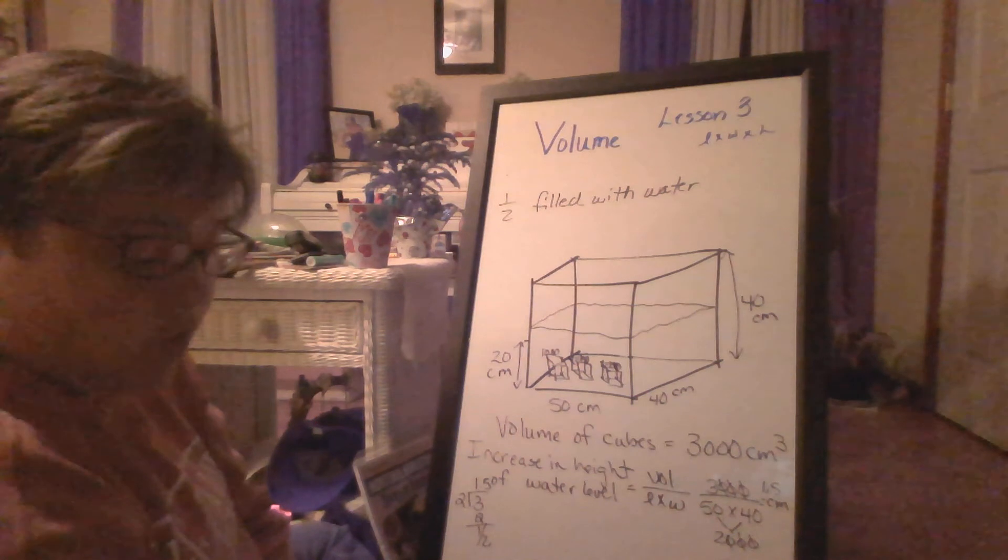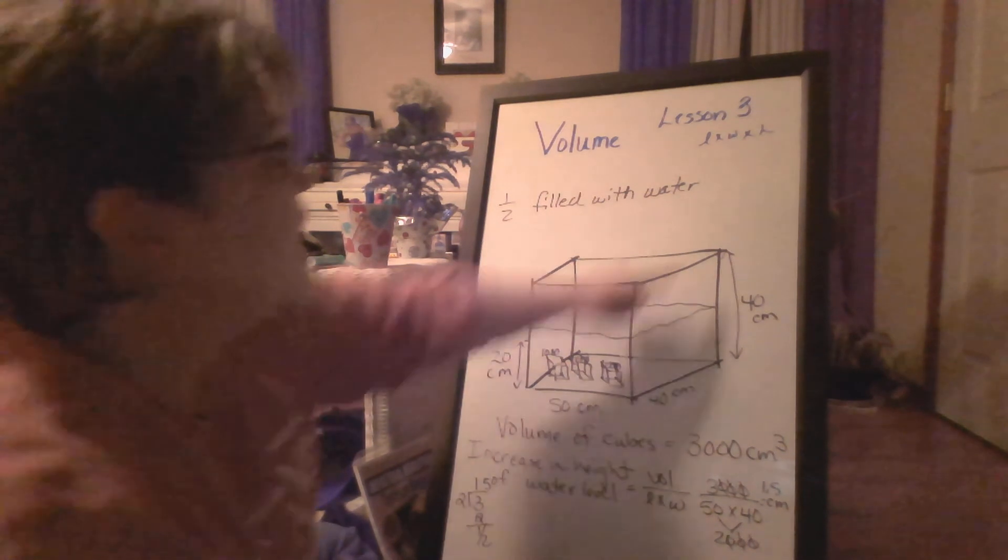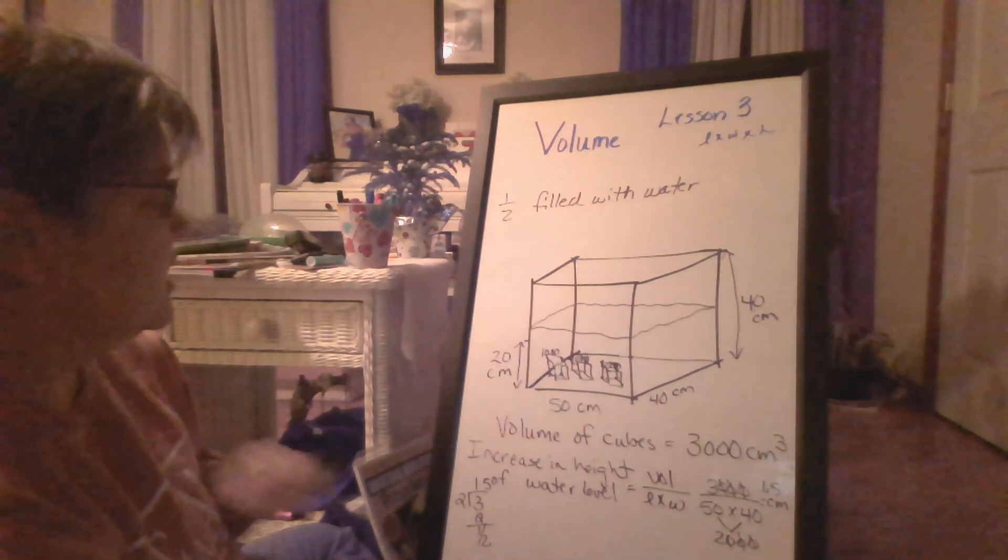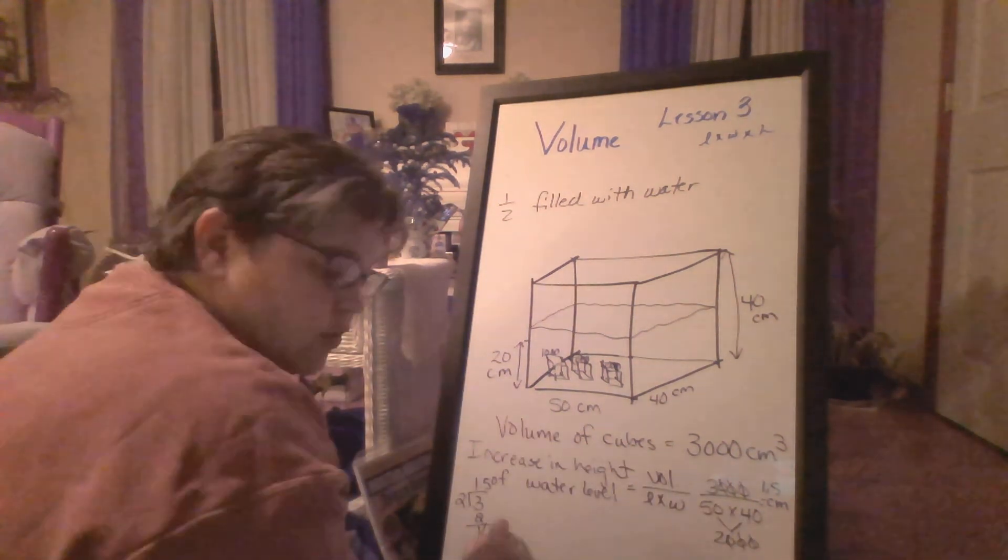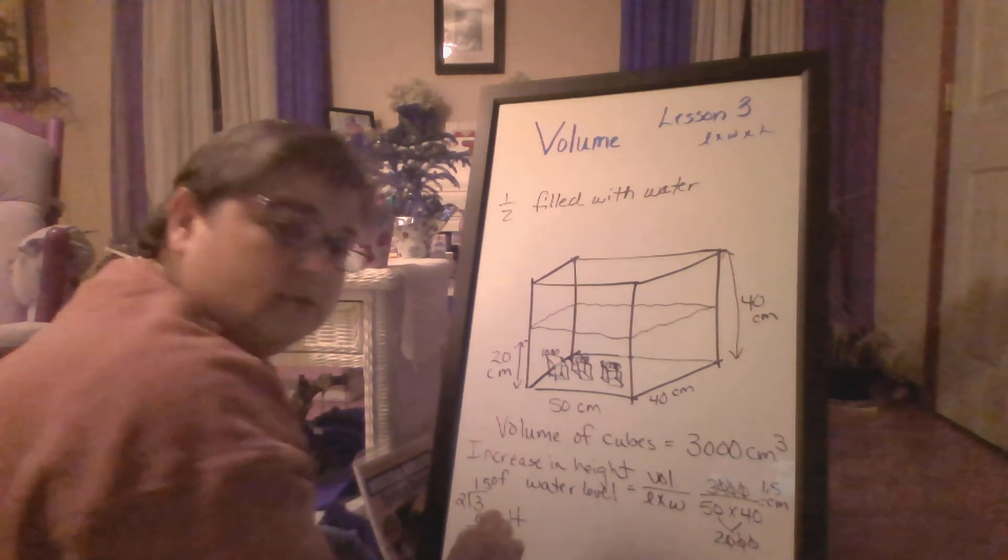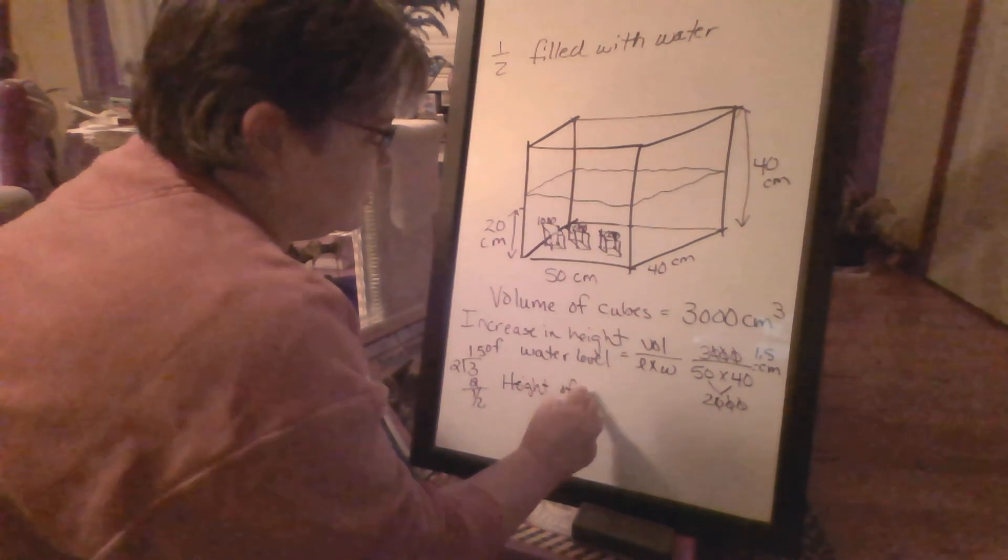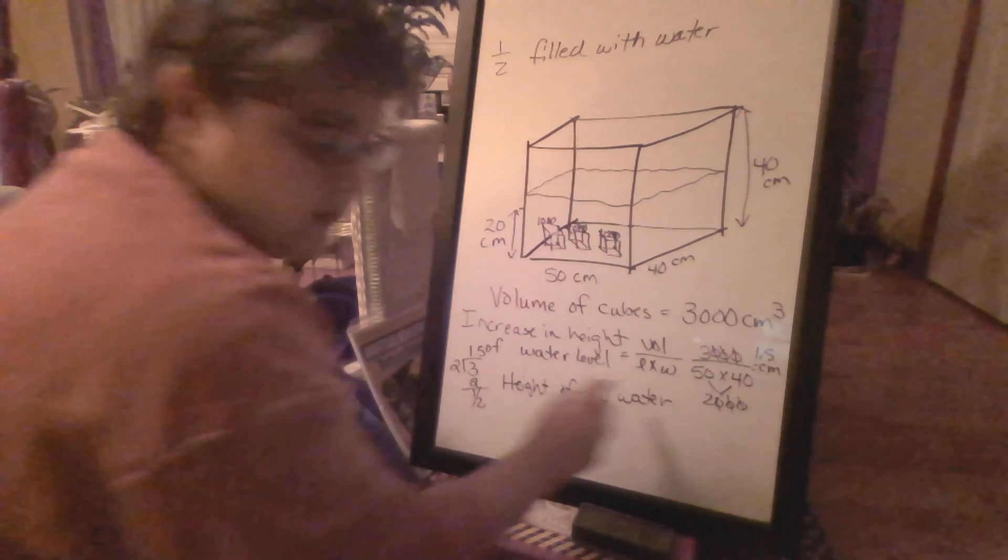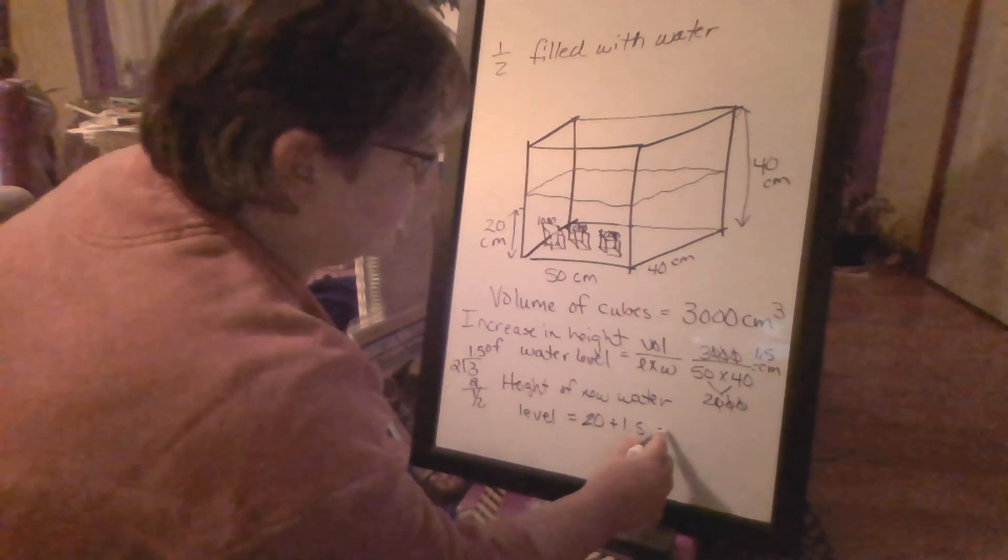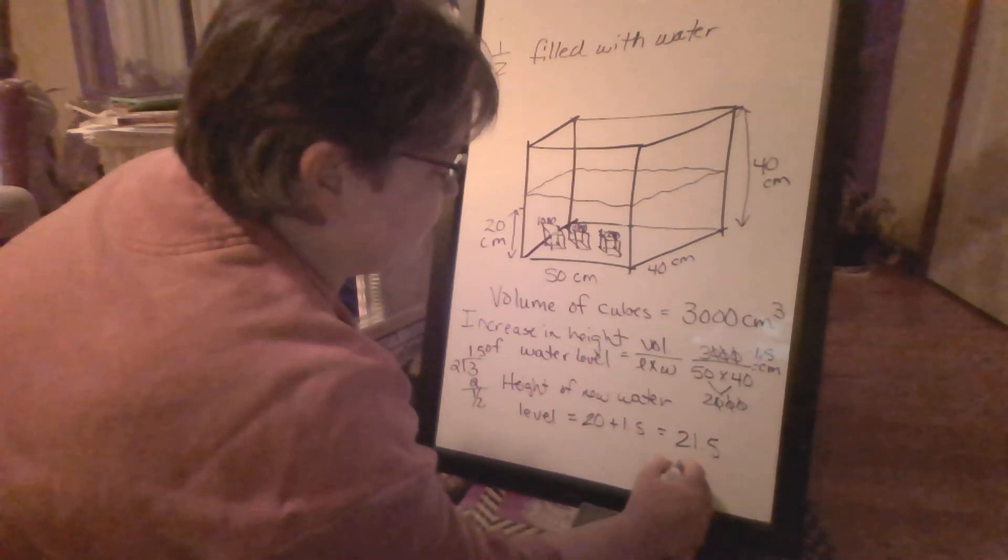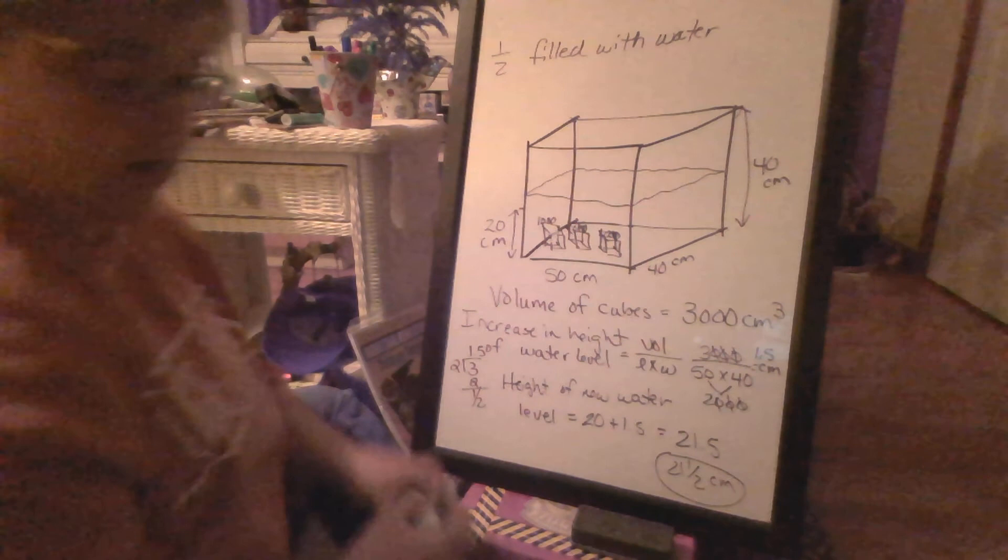All right. Now, the height of the new water level, then we know that it was 20 centimeters tall because it was half the height of the tank. And now to 20 centimeters, we're going 20 centimeters, we're going to add a one and a half centimeters. So the height of new water, the new water level is going to be 20 plus one and a half, which equals 21.5 or 21 and a half. 20 centimeters. That's how you get that answer.